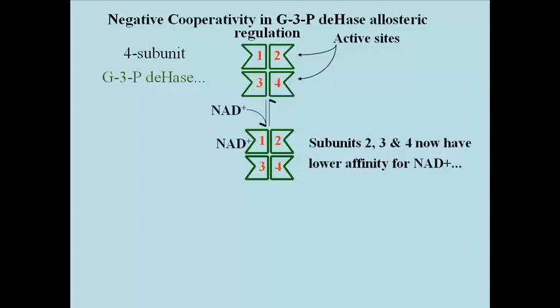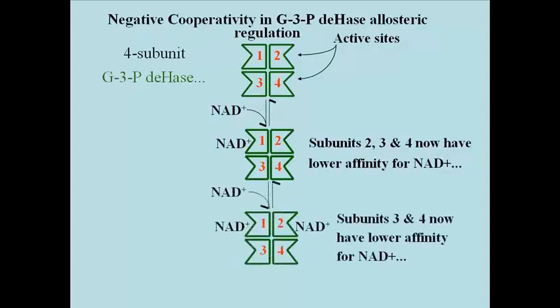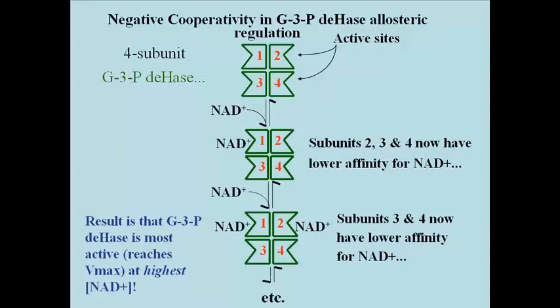After one subunit binds NAD+, the remaining subunits have a lower affinity for NAD+. That means more NAD+ needs to be around before a second subunit will bind a molecule of NAD+. If the concentration of NAD+ is high enough, another NAD+ can bind to a second subunit, but this in turn will lower the affinity of the two remaining subunits for NAD+, and so on. It will take very high levels of NAD+ to bind all four subunits of glyceraldehyde 3-phosphate dehydrogenase, so that the enzyme will be most active — that is, it will reach its Vmax or maximal rate of catalysis — only when NAD+ levels are at very high or relatively very high concentrations.